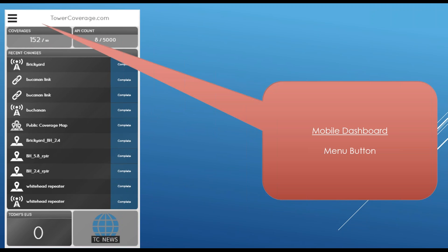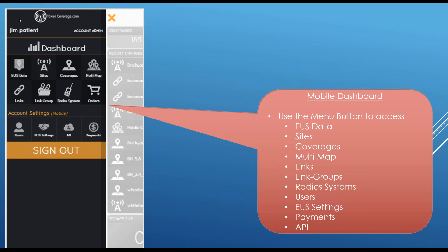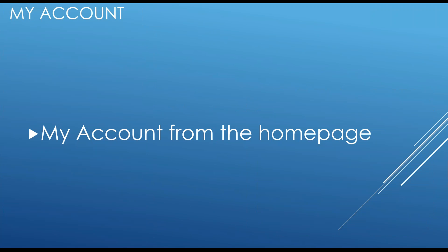We have a mobile dashboard menu button — the triple dots or dashes at the top. When you click it, you get the actual menu system, which allows you to access EUS data, sites, coverages, multi-maps, and so on. While most of our feature set is available on the mobile application, some special things are only available on the main website, mostly settings and non-daily-use items.